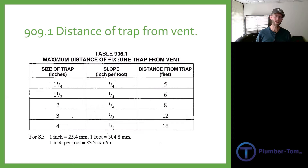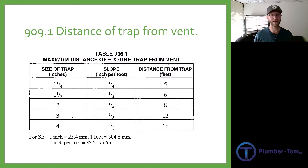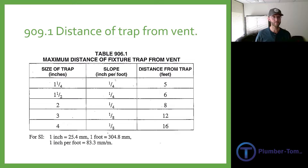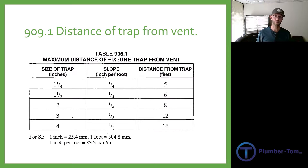Section 909.1 — we look at distance from the trap vent. This is one you need to memorize. On table 906.1, we have a list of trap sizes from one and a quarter up to four inches. The slope coordinates directly with chapter seven. We have quarter-inch per foot all the way up to two-inch pipe, and then eighth-inch per foot for the three and four inch. Then we have distances from the trap: five feet for an inch and a quarter.